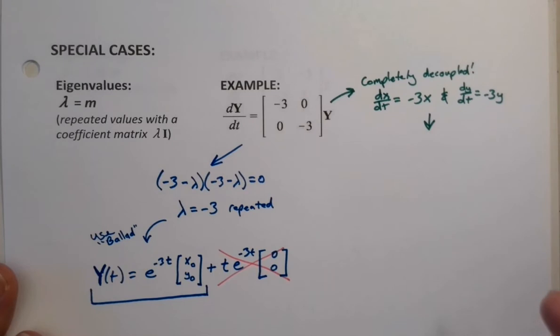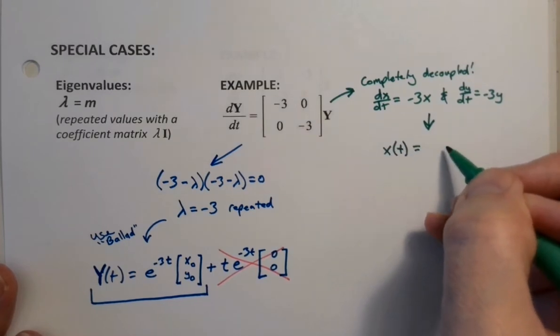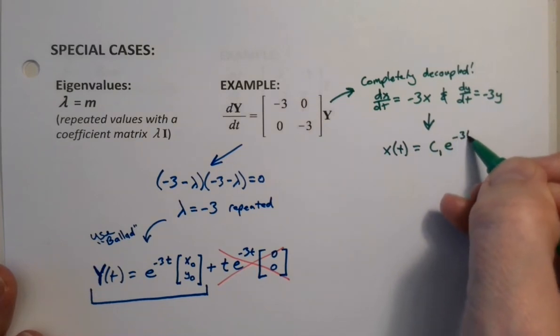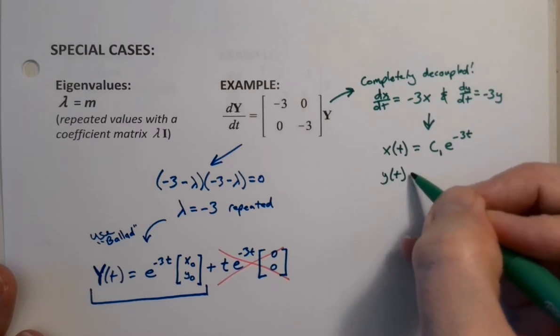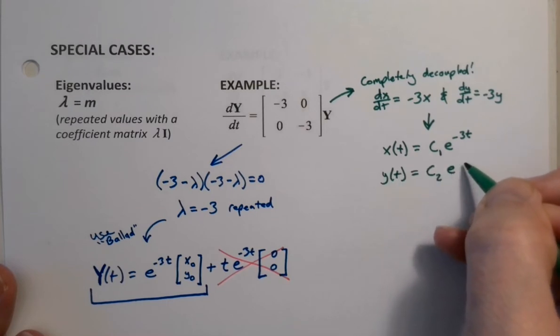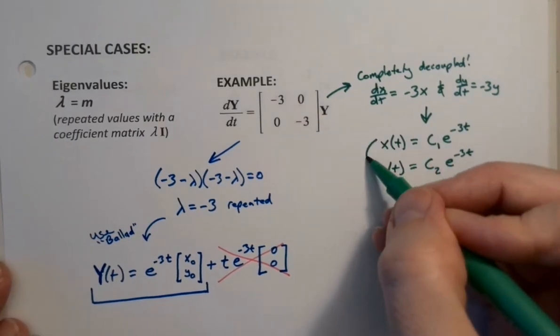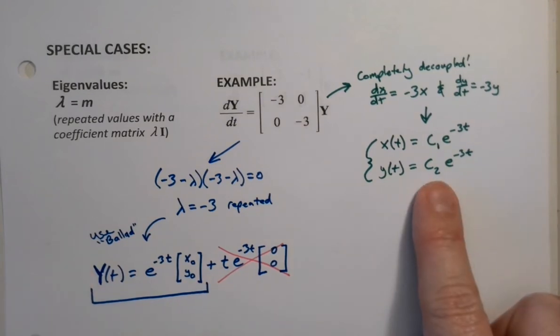which we could have done way back in chapter one, just by saying x of t is c1e to the negative 3t and y of t is c2e to the negative 3t. And if you're thinking, wow, that looks kind of familiar, that's because this is exactly the same thing as what we have here. The only difference is down here we're calling them x of zero and y sub zero. Up here we're calling them c1 and c2.